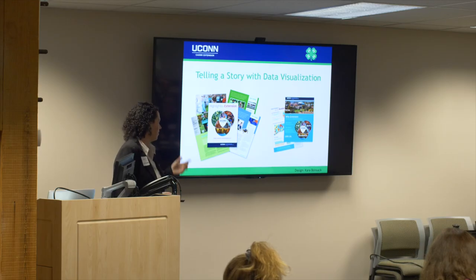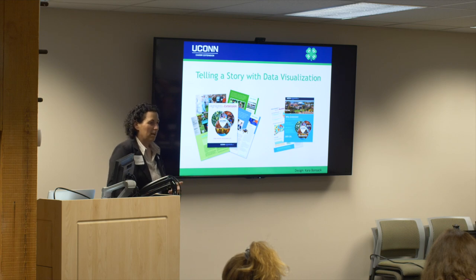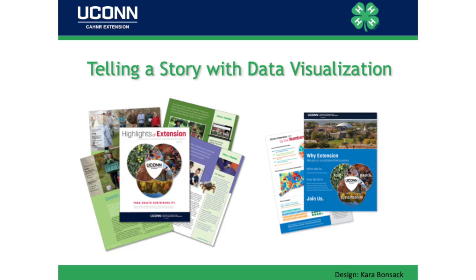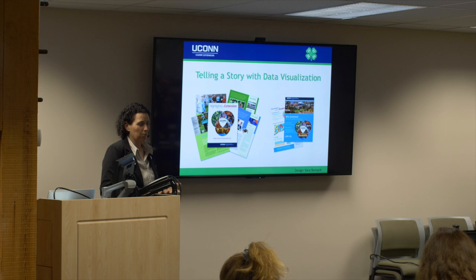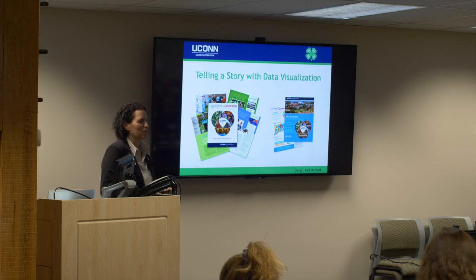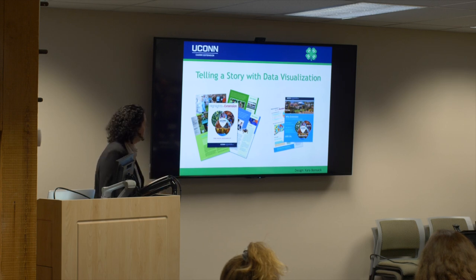On your left is our highlights report. Research stations at each of your universities are federally required to have a highlights report go to the legislature every year — Extension is not, but our Extension director thought it would be good. That's where we put all our pictures. On the right is our impact sheet — that's basic data visualization where we put our charts and numbers. We call it eye candy. When you give it to legislators, they immediately understand what it means.